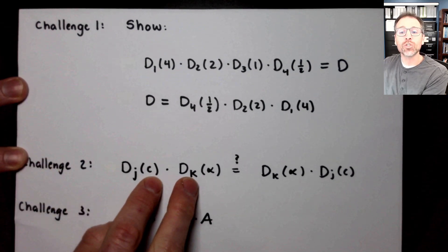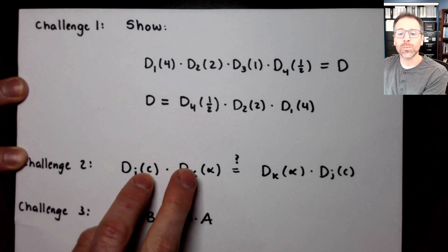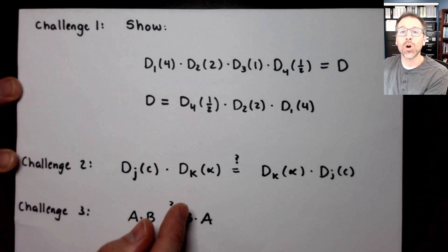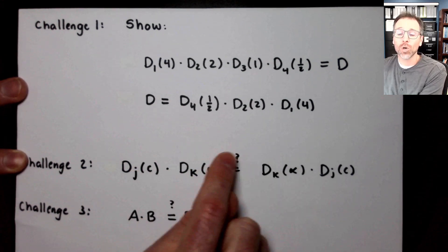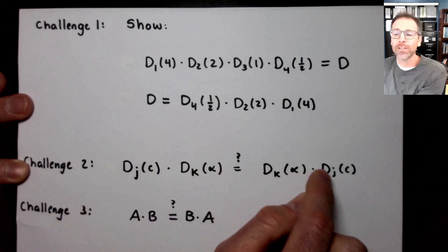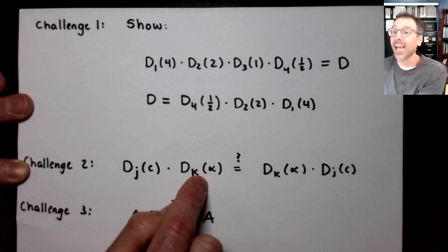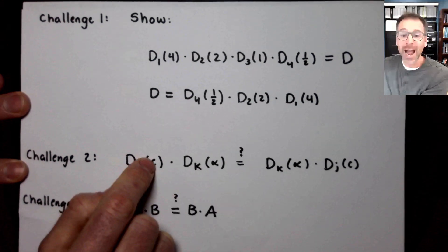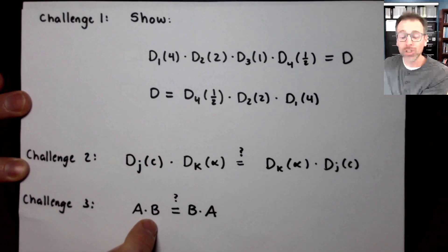If so, why? If not, why not? So go ahead and see, is Dj of c times Dk of alpha equal to Dk of alpha times Dj of c, where j and k could be equal, but they don't have to be. And then this leads very naturally into a much larger question. Remember, dilation matrices are square.